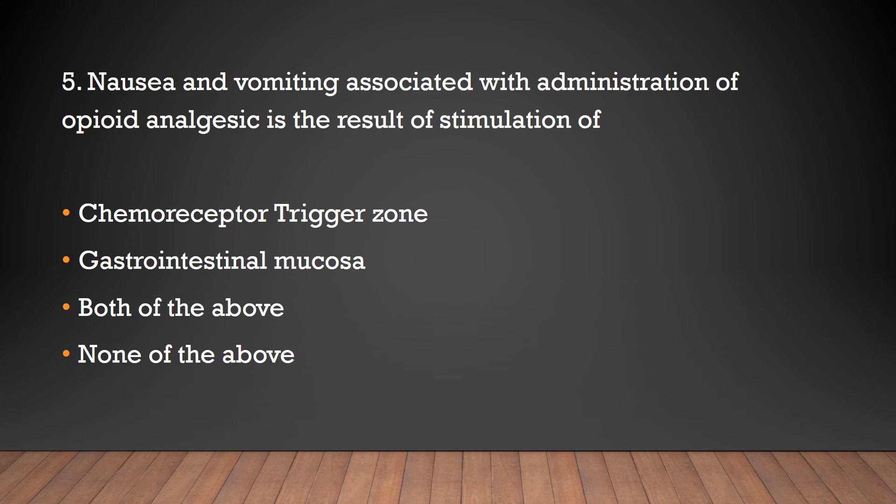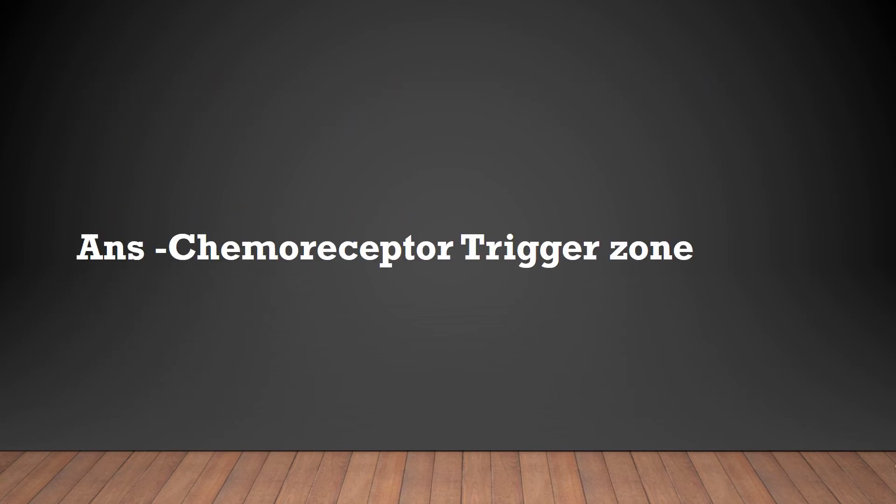Nausea and vomiting associated with administration of opioid analgesics is a result of stimulation of: chemoreceptor trigger zone, gastrointestinal mucosa, both of the above, or none of the above? The answer is chemoreceptor trigger zone.